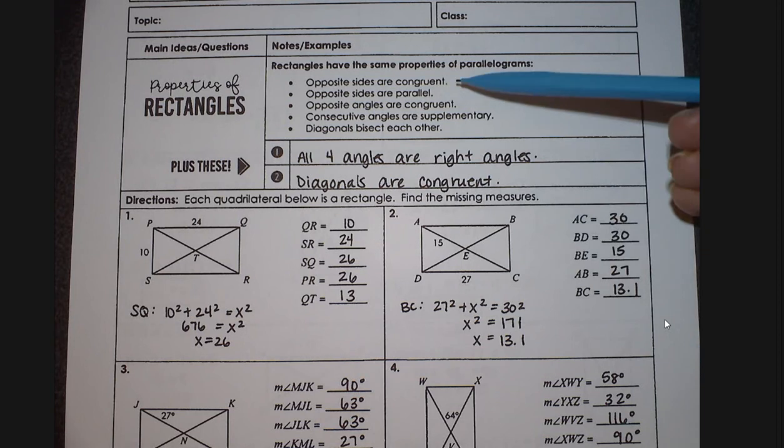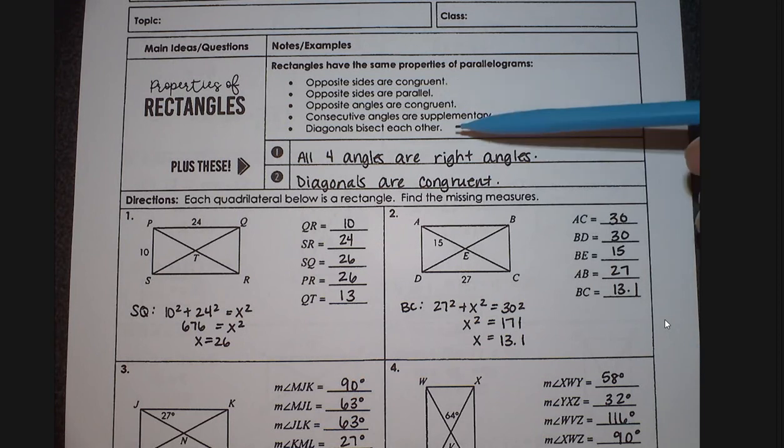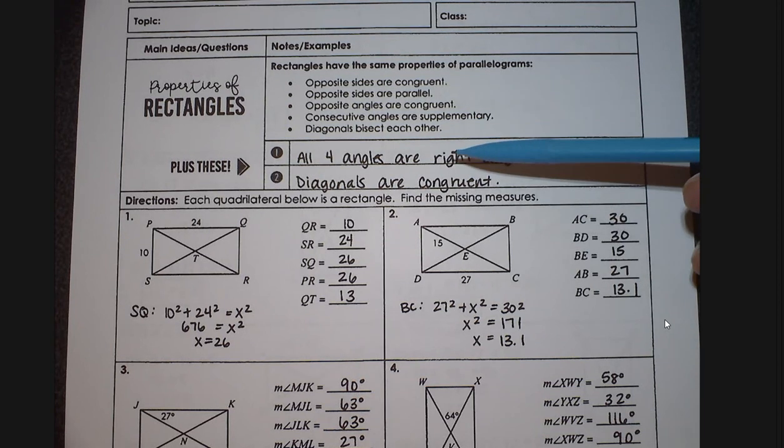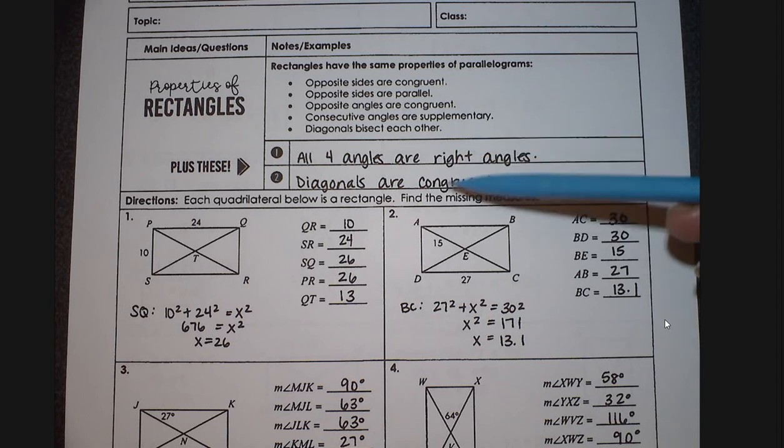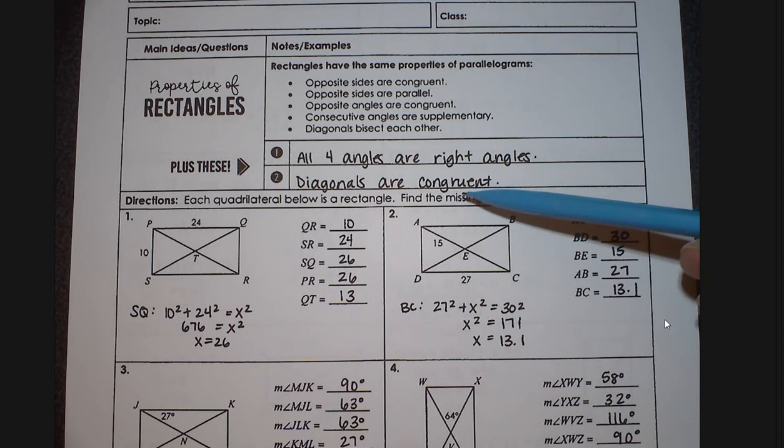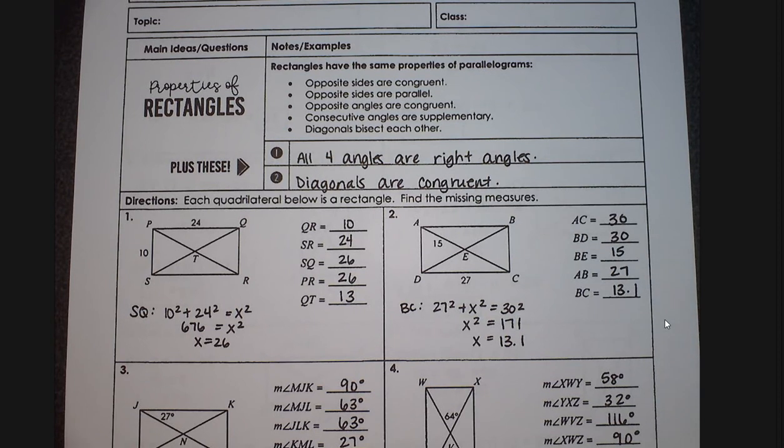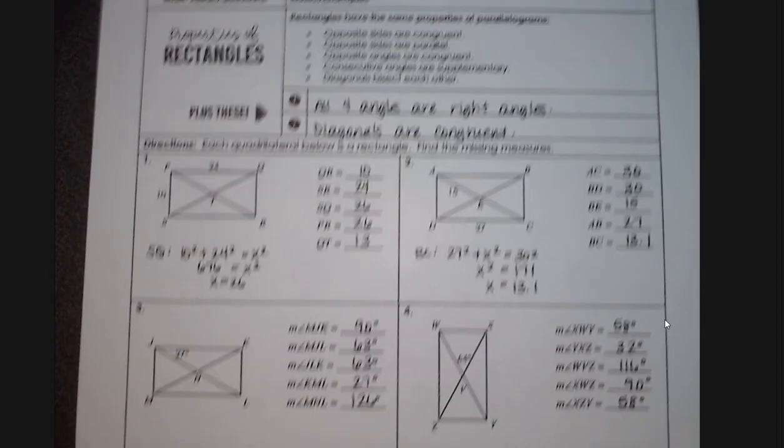These are your general properties of your parallelograms, and then when we add in the fact that it's a rectangle, all four of your angles are going to be right, and your diagonals are also going to be congruent. So this is going to be posted. This sheet is going to be posted, so you'll be able to refer to it. I just want to run through a few things with you.